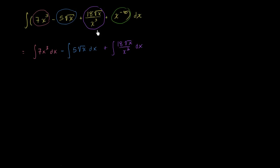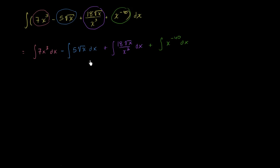Finally, we can take the antiderivative of x to the negative 40th power dx. So I've just rewritten this and color coded things. Now let's take the antiderivative of each of these. We'll be able to do it using the inverse of the power rule, or the anti-power rule.